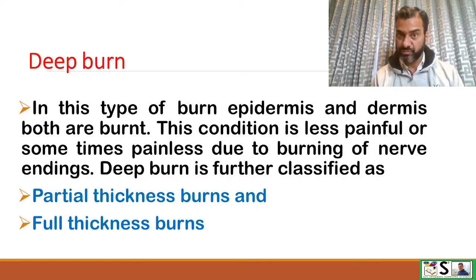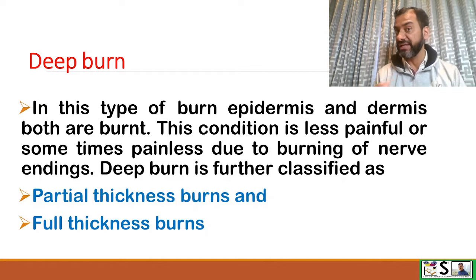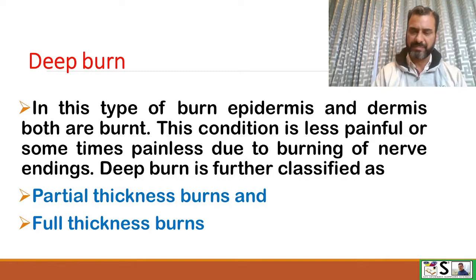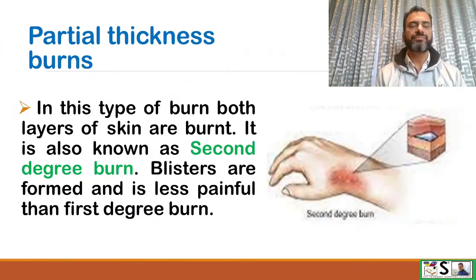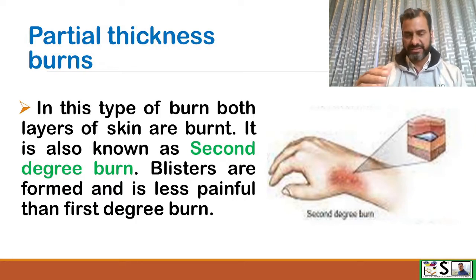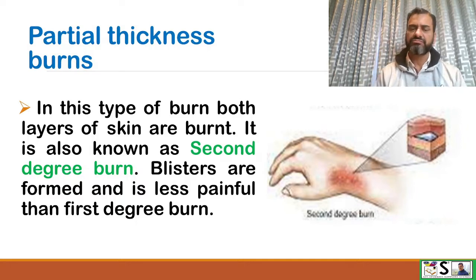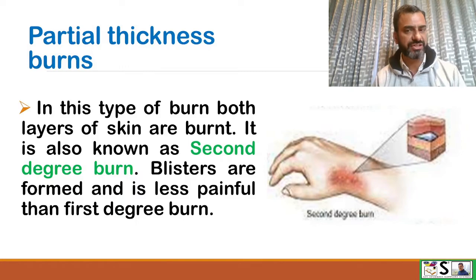In partial thickness burn, both the epidermis and dermis are burned. This condition is less painful, or sometimes painless, due to burning of the nerve endings. Deep burn is further classified as partial thickness burn and full thickness burn. Partial thickness burn is also known as second degree burn. Blisters are formed and it is less painful than first degree burn.